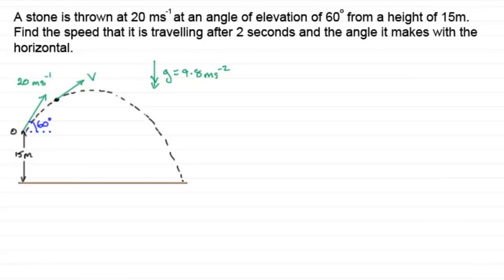Now, to do questions like this, what we need to do is consider the components of v at this particular moment in time. And one will be horizontal, and one will be vertical. And by doing this, what we do is we create a vector triangle, like this.